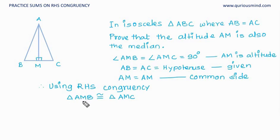Once we get the triangles as congruent, we can now say that the remaining elements are also equal by using corresponding parts of congruent triangles. So here we can say that BM is equal to CM.